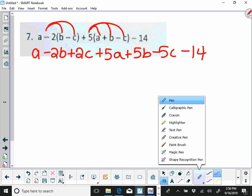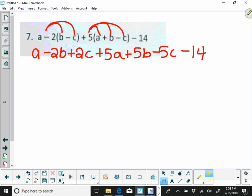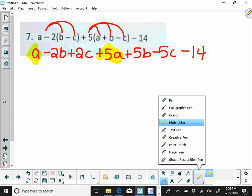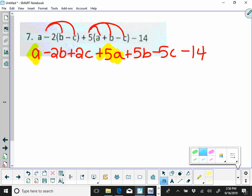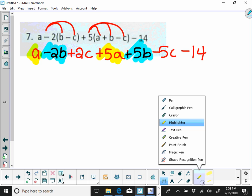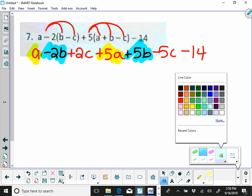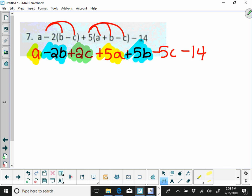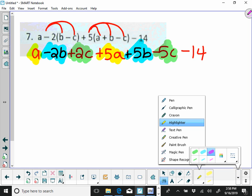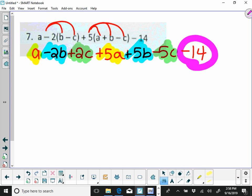So combine like terms. We've got 5a, you're going to have negative 2b and 5b, you're going to have 2c and negative 5c, and then the last one that you have here is going to be your negative 14.